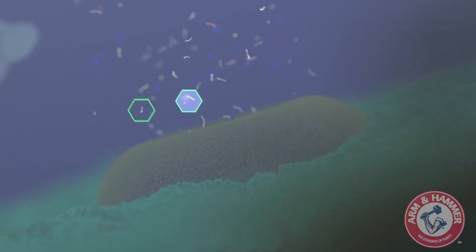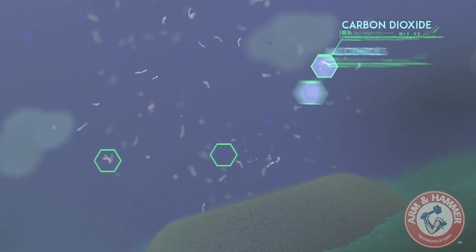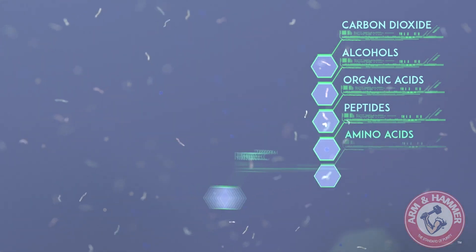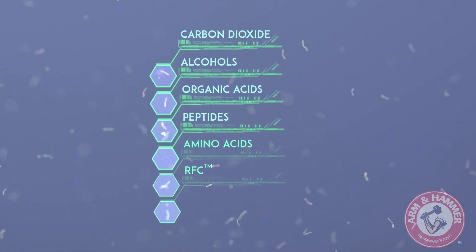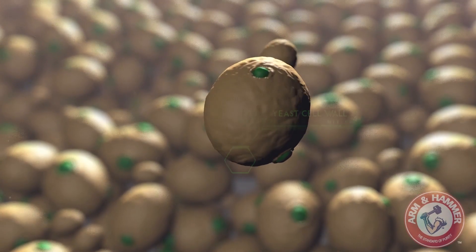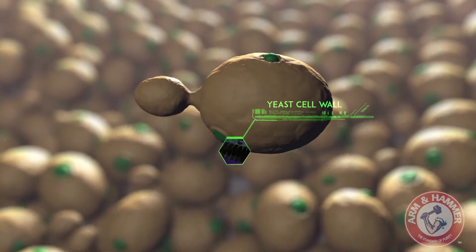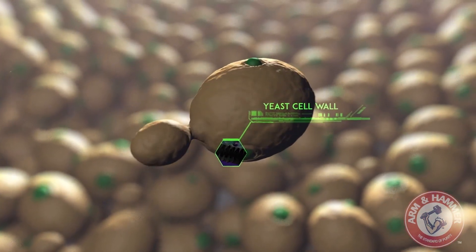This process liberates a variety of byproducts including carbon dioxide, alcohols, organic acids, peptides, amino acids, and a number of refined functional carbohydrates. Several of these nutrients are processed into finished product, commonly referred to as yeast culture, and used in the agricultural industry as feed additives. But apart from what the yeast cell can produce during fermentation, what it's made of holds the key to its further use.